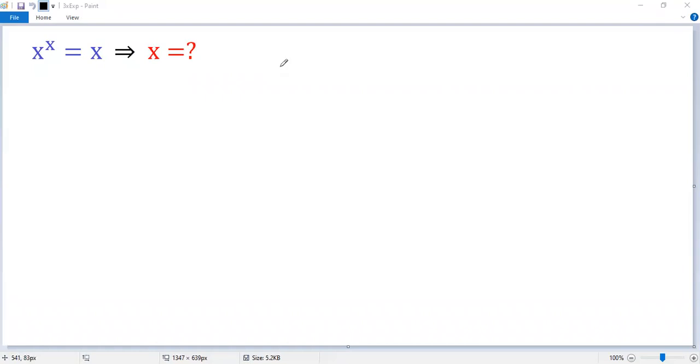Let's see how to solve the nice exponential equation. First, we know x cannot be 0. Otherwise, 0 to the power of 0 is undefined.